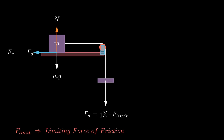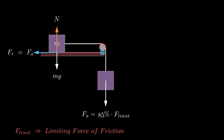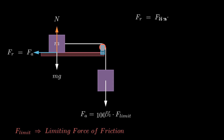With the gradual increase in the applied force, a critical point is eventually reached where the frictional force becomes inadequate to keep the object stationary, leading to its acceleration. The maximum force needed for the object to initiate acceleration is commonly referred to as the limiting force of friction. At this point, the frictional force is equal to the limiting force of friction.